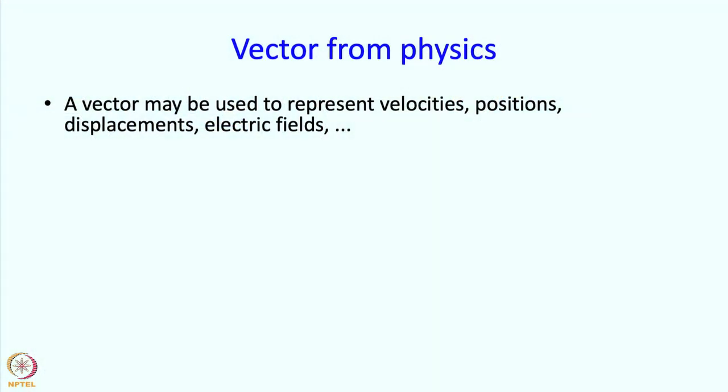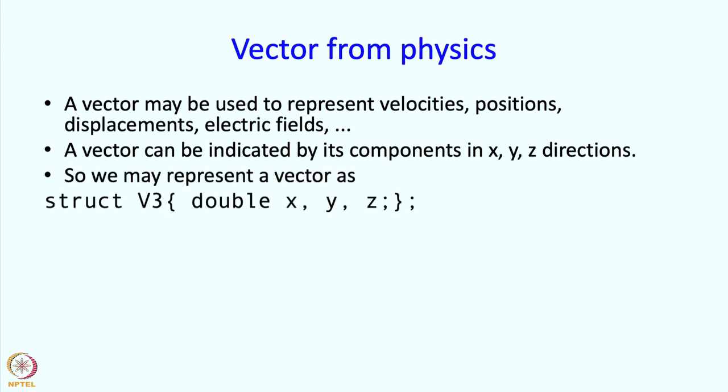So let me show you these examples in more detail. Vectors from physics. In physics vectors are used to represent lots of things: velocities, positions, displacements, electric fields. And if it is a vector in 3 dimensions then it can be indicated by its components in the x, y, z directions. So maybe we might have a vector type v3 and it contains members x, y and z.